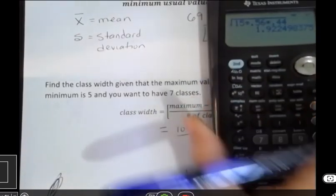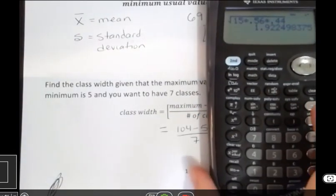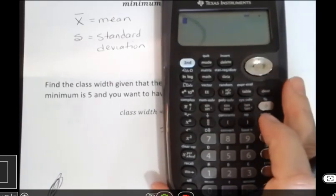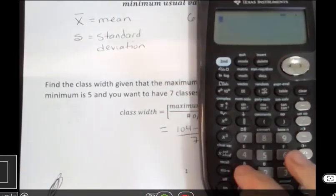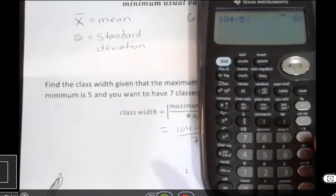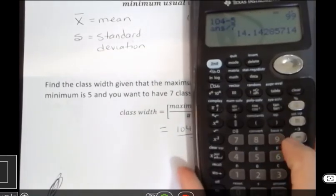And so when I put that into the calculator, I can do it a number of different ways. I don't care if I have a decimal, that's fine. So I have 104 minus 5, and then divided by 7, and that gives me 14.14.